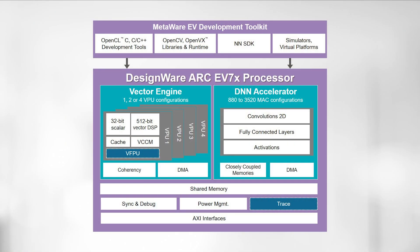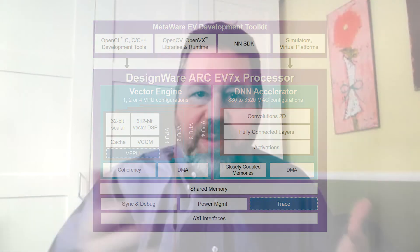Here at Synopsys we have the EV7X family with a scalable DNN solution. If you're looking to implement super resolution, you're going to need to know the input resolution, the output resolution, any bandwidth limitations — maybe you have one LPDDR4 in the system, maybe you have multiple — and then your frame rate targets. From there, we can help figure out which of the EV7X processors with their DNN options is right for you.